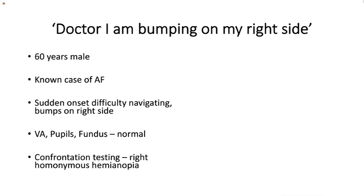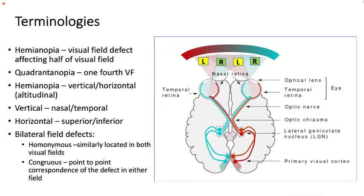Case one: a patient with cardiac risk factors presents with sudden-onset difficulty navigating and bumping into things on the right side. Examination shows normal visual acuity, pupils, and fundus. On confrontation, there is a right homonymous hemianopia.